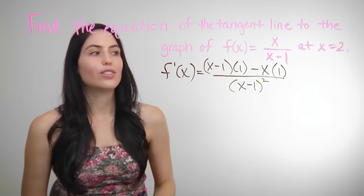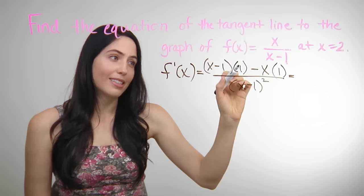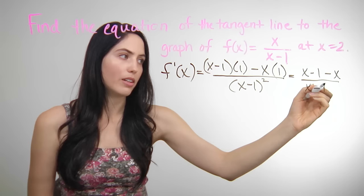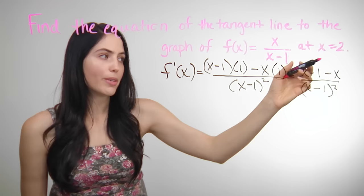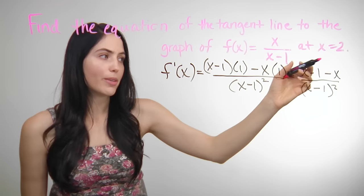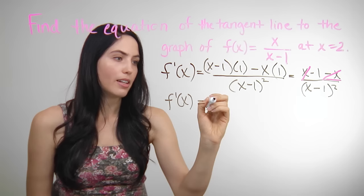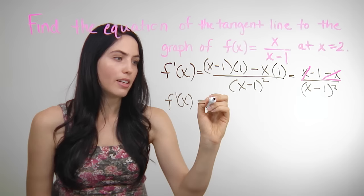You should simplify because things will cancel. Try simplifying within the numerator first. This is x minus 1, minus x, all over x minus 1 squared. The x minus x cancels, and you're just left with negative 1 on top. So the simplest way to write your derivative f prime of x is negative 1 over x minus 1 squared.